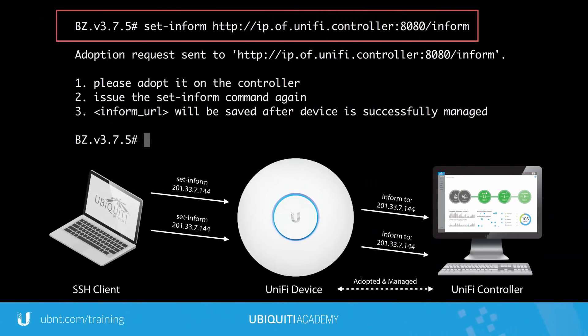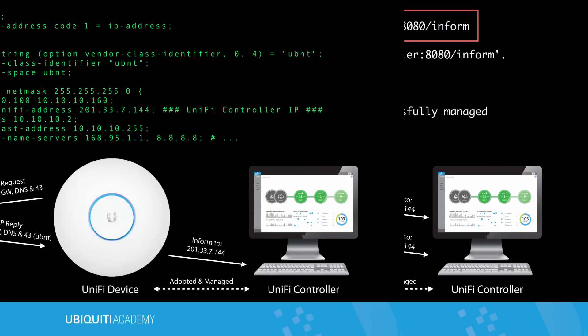Alternatively, any SSH client like Terminal or PuTTY can be used to connect to a Unify device, then update its Inform URL to the Layer 3 IP of the Unify controller via the SetInform command.